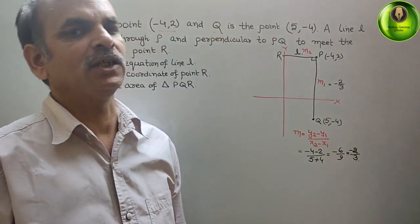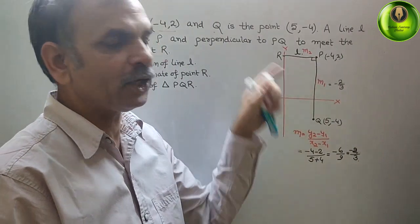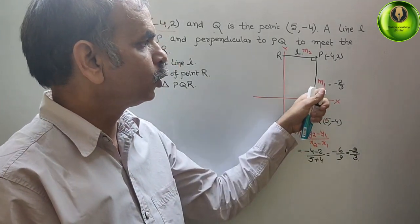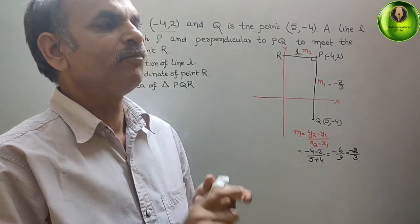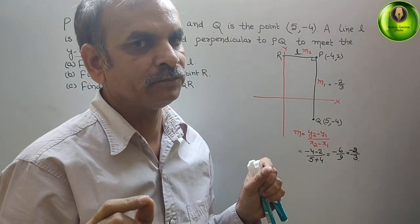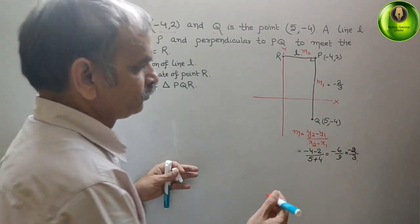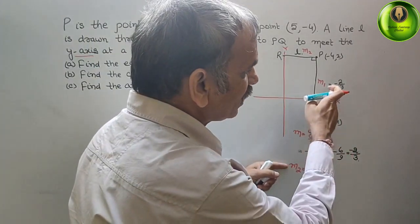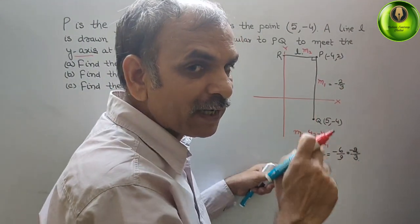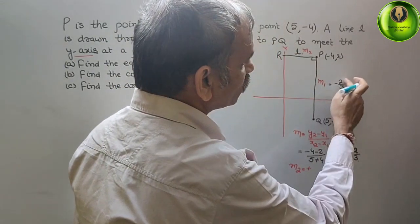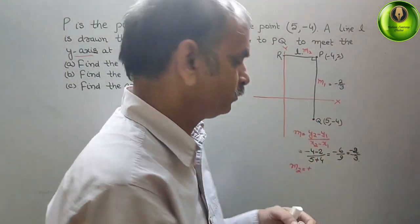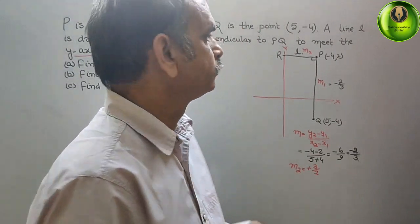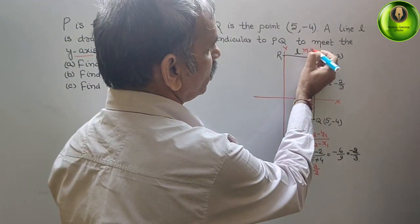If M1 is -2/3, and L is the perpendicular line with gradient M2, we know that the product of two gradients of perpendicular lines equals -1. Therefore, M2 = -1 / (-2/3). The minus cancels, and we flip 2/3 to get 3/2. So M2 = 3/2.